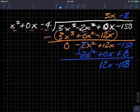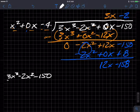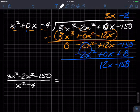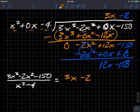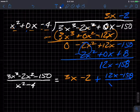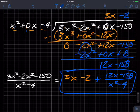And so our answer to this problem, 3x. Let's do that. 3x cubed minus 2x squared minus 150 divided by x squared minus 4 is equal to 3x. 3x minus 2 plus 12x minus 158 divided by the divisor, which was x squared minus 4. Okay? And so that's what our answer would be. That guy right there. All right?